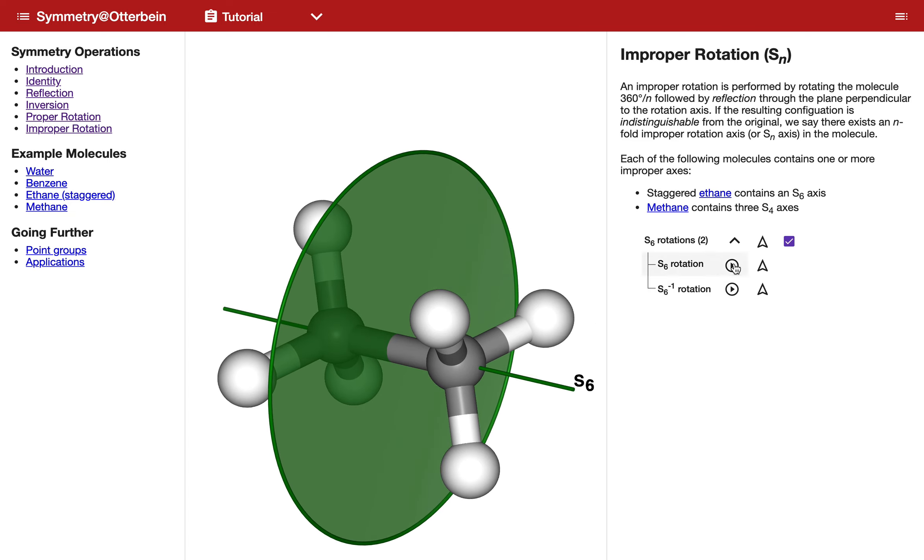So if we were to activate this and see what that operation looks like, it looks like this. There's a rotation and then a reflection through that. Let's take a look at that again.